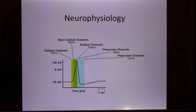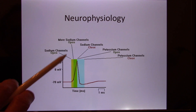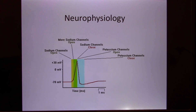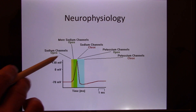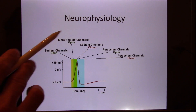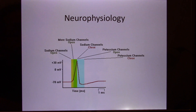We are in Neurophysiology. In this lecture, we'll talk about how neurons generate the electrical signal — this is the action potential — and we'll talk about what ion channels open and what ion channels close so they are able to do this.